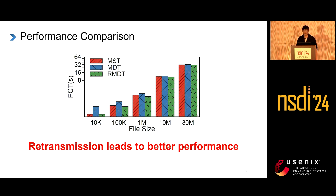To verify the impact of retransmissions on performance, we emulated a client-to-tunnel-server link with 2% packet loss. We transmitted files of different sizes — 10 KB, 100 KB, 1 MB, 10 MB, and 30 MB — to compare file completion time across tunnel types. We found that when the file size is small, retransmission results in significant benefits, as seen for 10 KB and 100 KB.